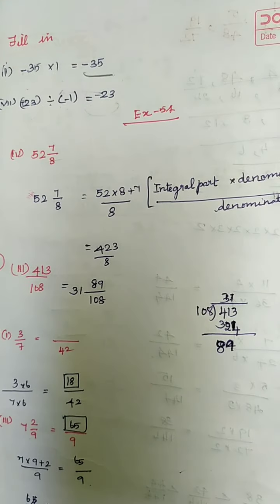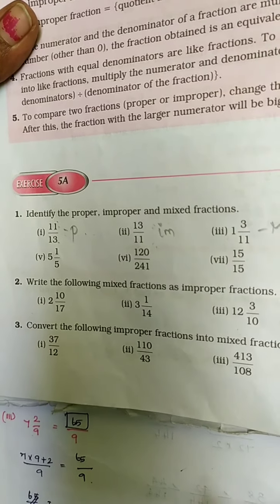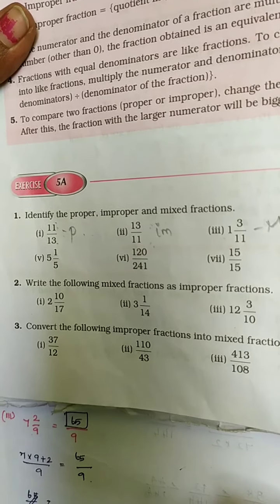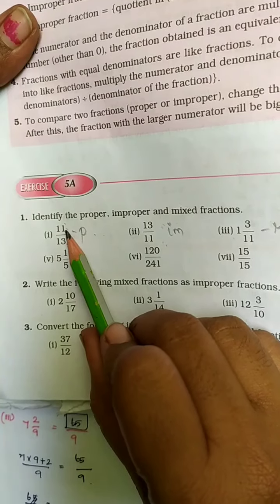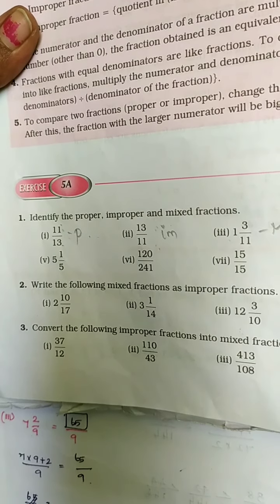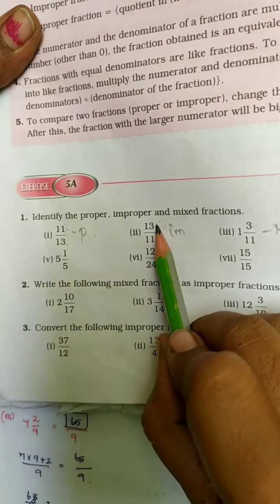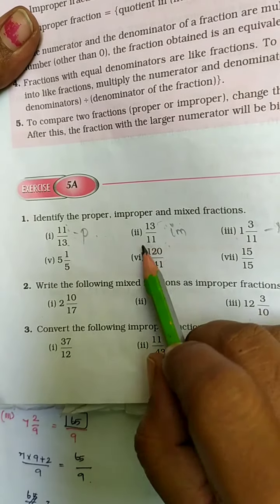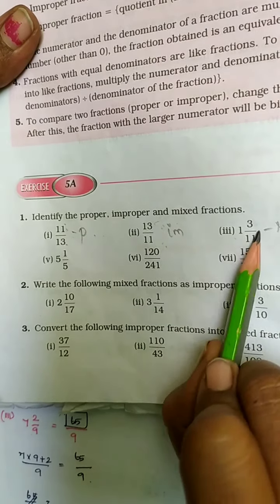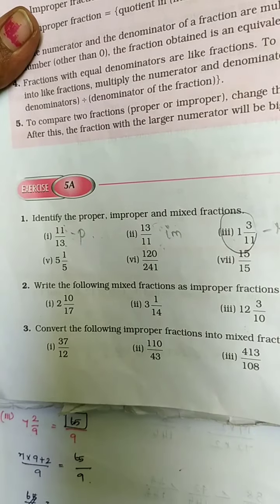Now let's get into exercise 5A. Your first problem: identify proper, improper, or mixed fraction. 11 in the numerator, 13 in the denominator — proper fraction. 13 in the numerator — bigger number — so it is an improper fraction. A whole number and a fraction — it is a mixed fraction.